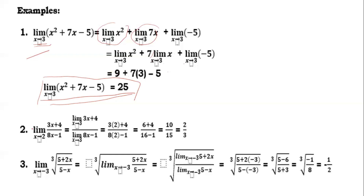Example two: the limit of (3x + 4) over (8x − 1) as x approaches 2. Substitute directly: 3 times 2 plus 4 over 8 times 2 minus 1. That gives 6 plus 4 over 16 minus 1, which is 10 over 15, simplified to 2/3. So the final answer is 2/3.